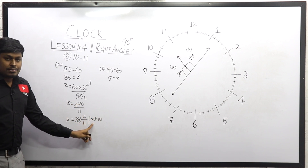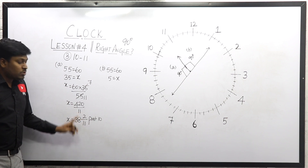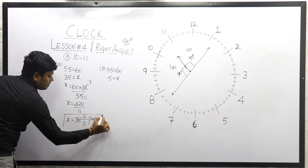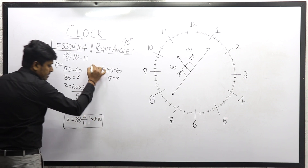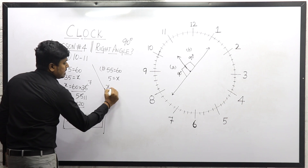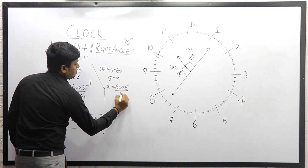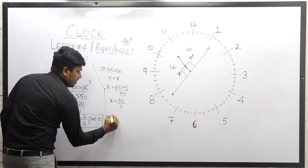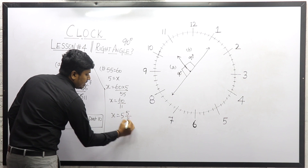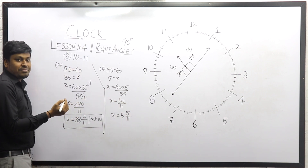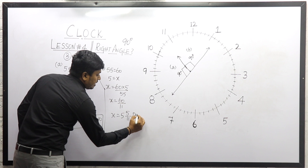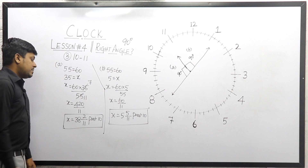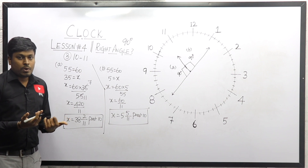So 10 o'clock 38 2/11th minute is answer number one. For the second answer: X equals 60 × 5 divided by 55, giving 60 divided by 11, which equals 5 5/11. So the second answer is 5 5/11 past 10. Any one answer will be in the option — mark it as the right answer.